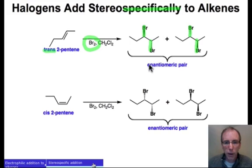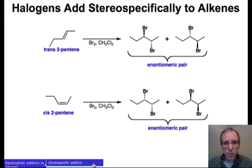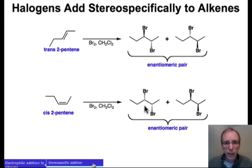We'll figure out where the enantiomeric pair comes from a little bit later on. But first, let's look at the cis case. Addition of bromine again produces two products, but these two products again have the same relative stereochemistry — both bromines are heading in the same direction, whether they be back or forward. Let's use the mechanism we've established for halogen addition to understand how trans produces one bromine out and one back, while cis produces both bromines heading in the same direction.